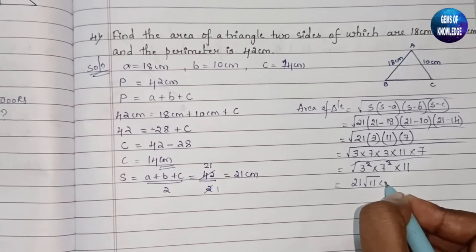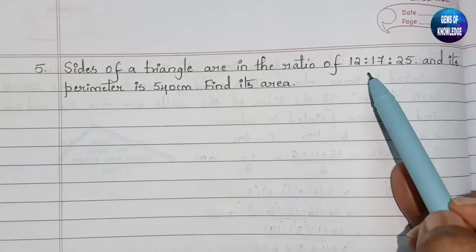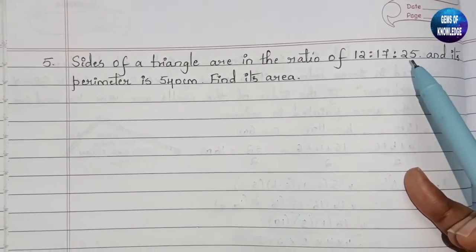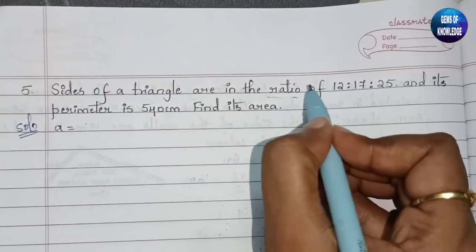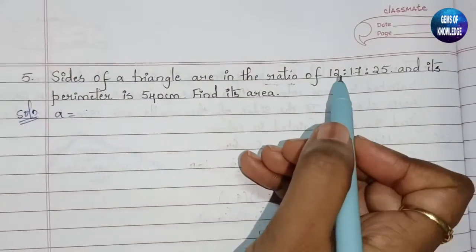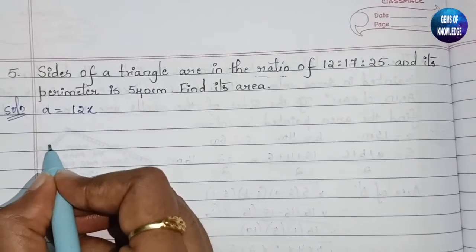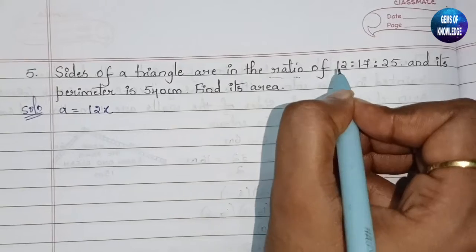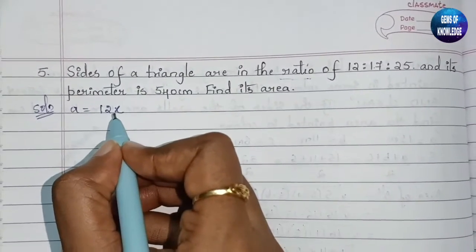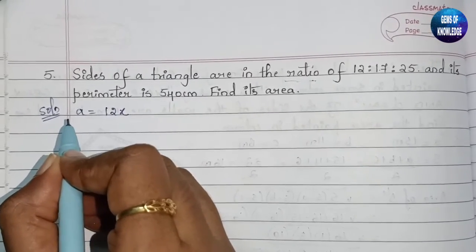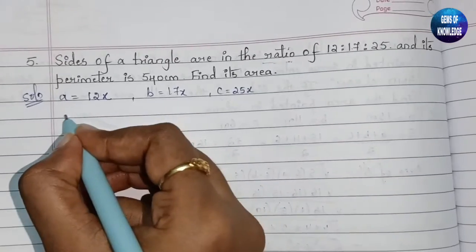The fifth question: sides of the triangle are in the ratio 12 : 17 : 25. Whenever a ratio is given, we write a equals 12x, b equals 17x, and c equals 25x, because we don't know the exact values — we multiply by x to find the actual side lengths.